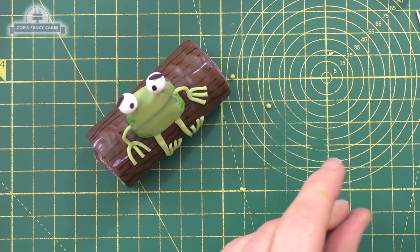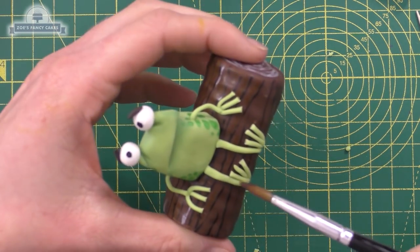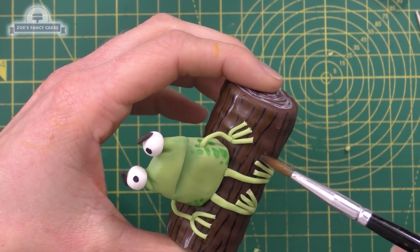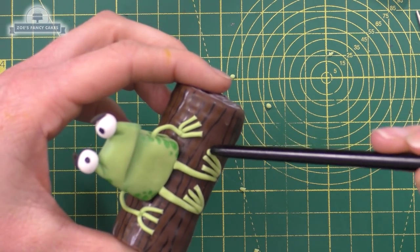The ends of the toes and fingers - we're going to roll some very tiny little balls and press them on. They're going to press on flat, but that's fine. I don't mind that.